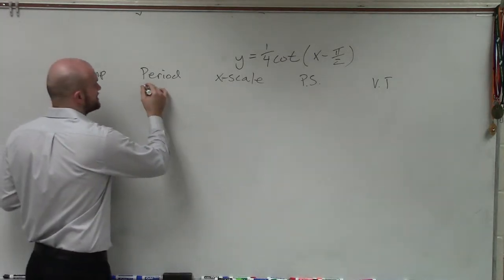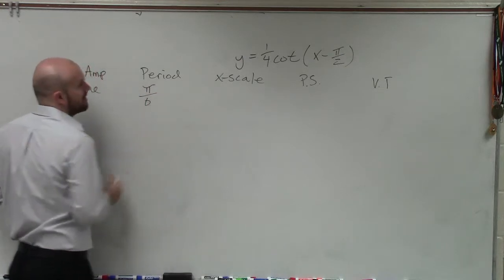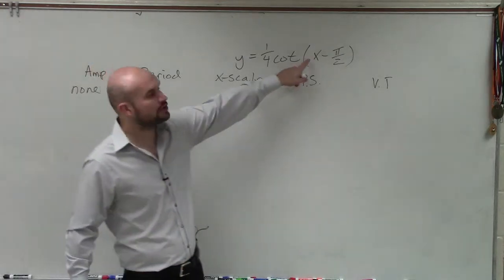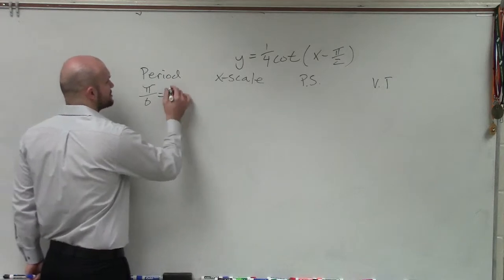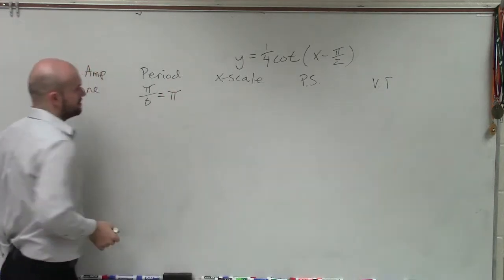Remember, period for the cotangent and tangent is just going to be π divided by b, where b is your coefficient of your x. And in this case, that's just going to be 1, so it's just going to be π.